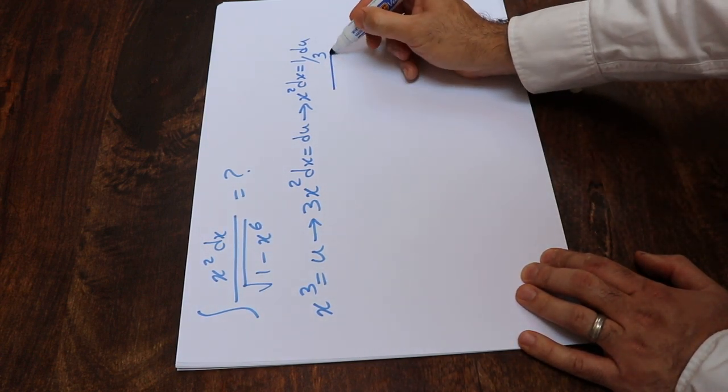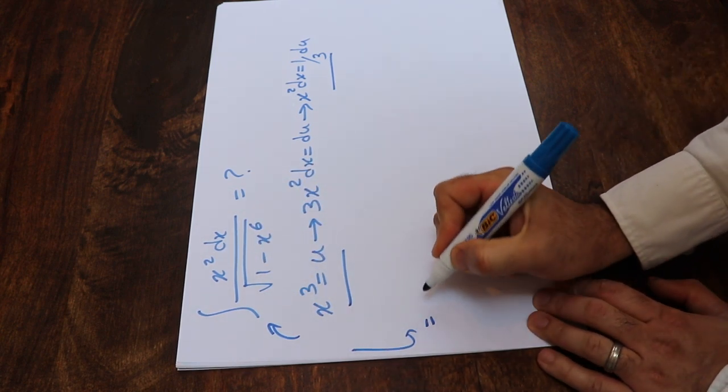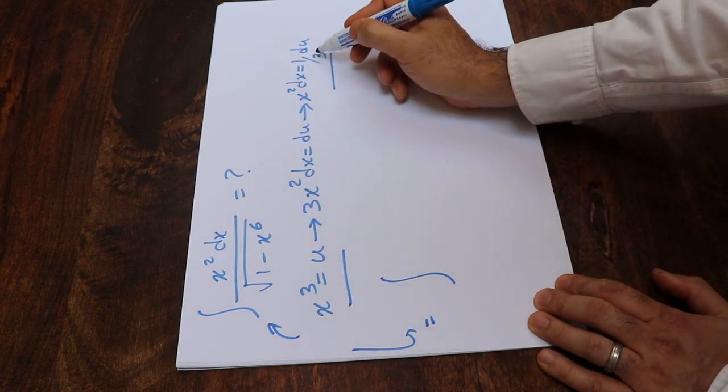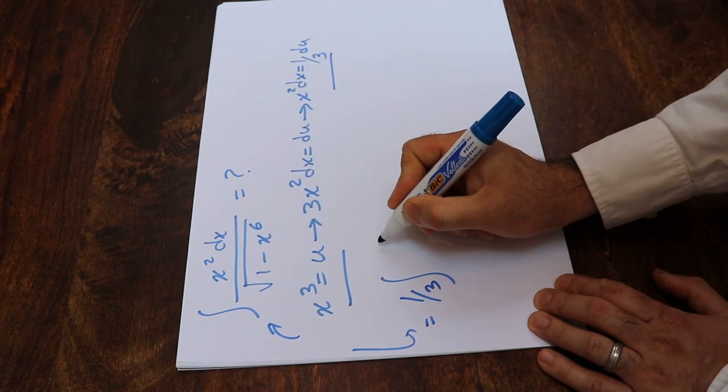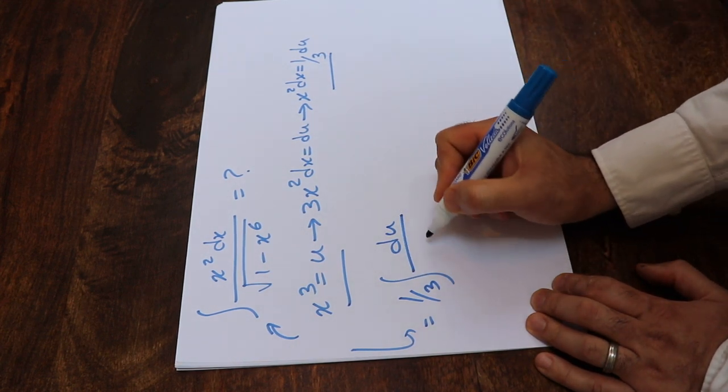Now if you substitute these two expressions into this integral, you can rewrite that integral as: instead of x² dx, I write 1 divided by 3 du. So 1 divided by 3 is constant, I take it out of the integral.